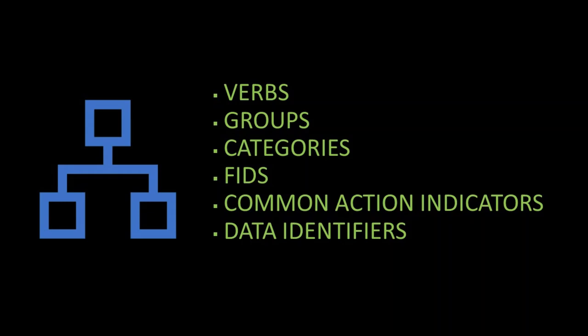You've now learned a little something about verbs, groups, categories, FIDs, common action indicators, and data identifiers. Now you're about to understand why you learned those six things — they're going to help you understand what comes next. That concludes the topic MMPA General Information. We are now about to proceed to the next lesson.